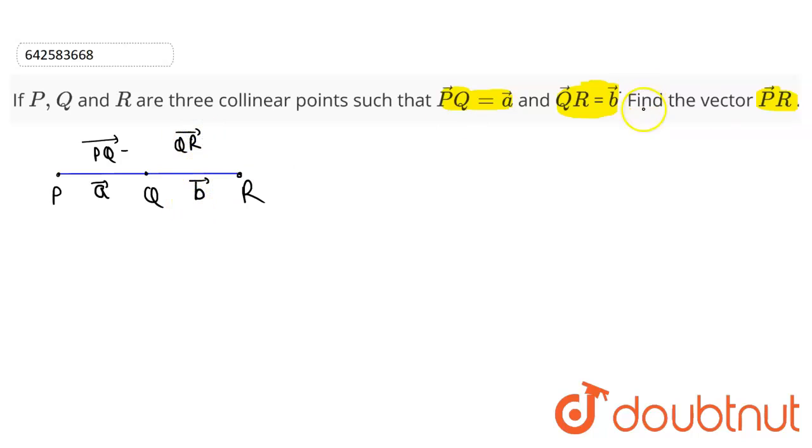We have to find PR vector. So basically, PR vector will have the same direction and will be consisting of this whole vector, this whole term. That means PR vector is equals to PQ vector